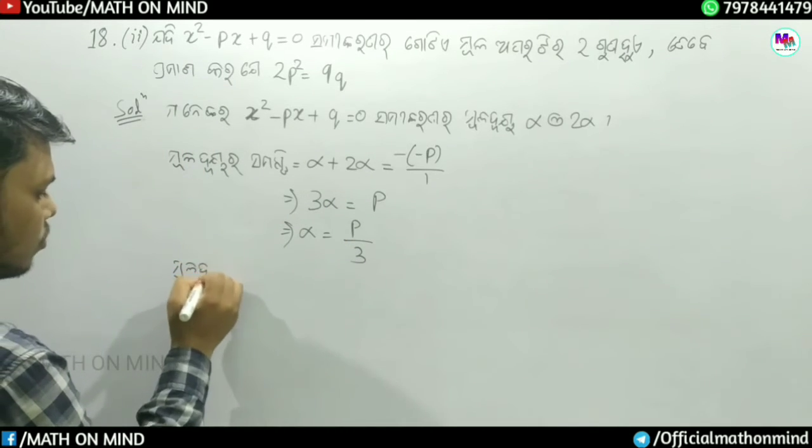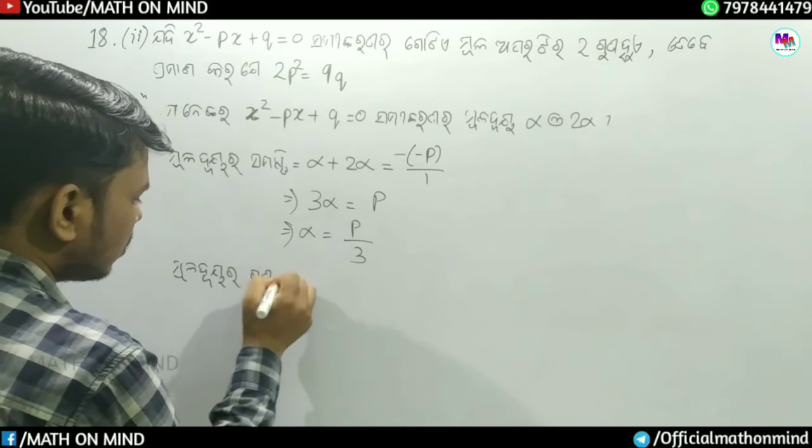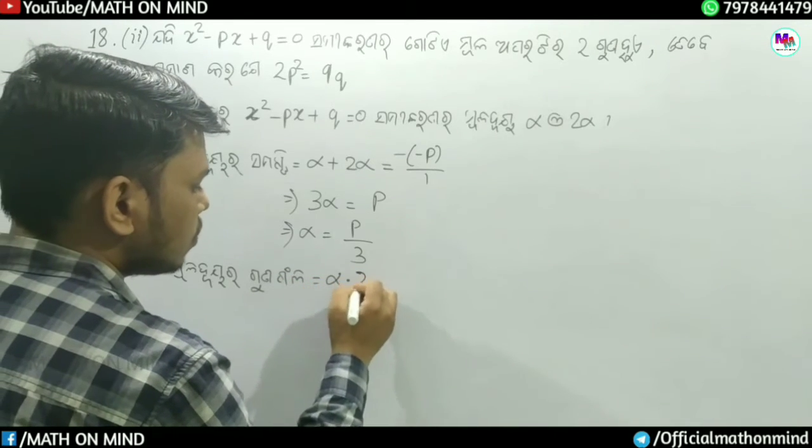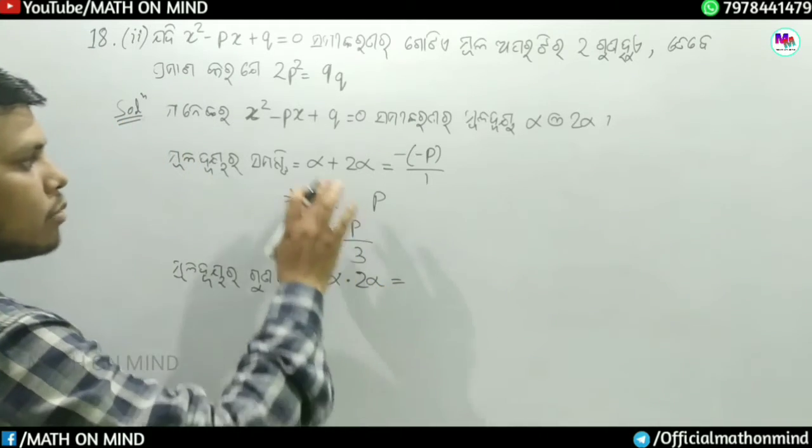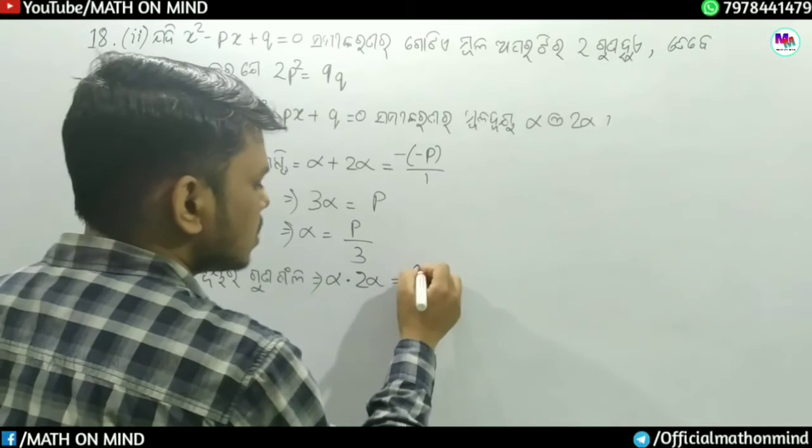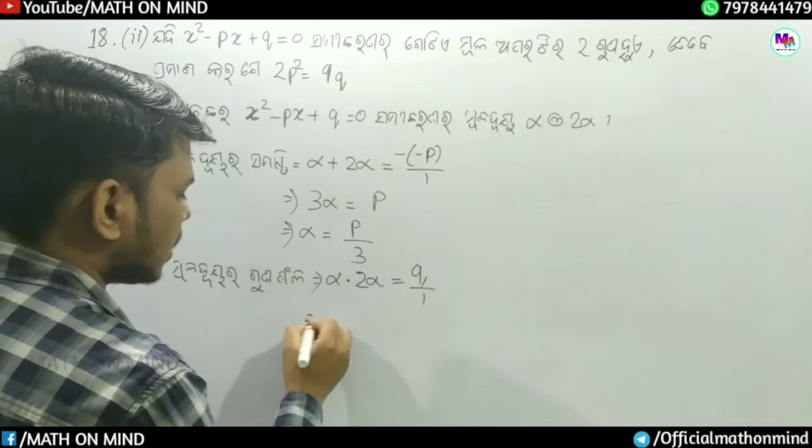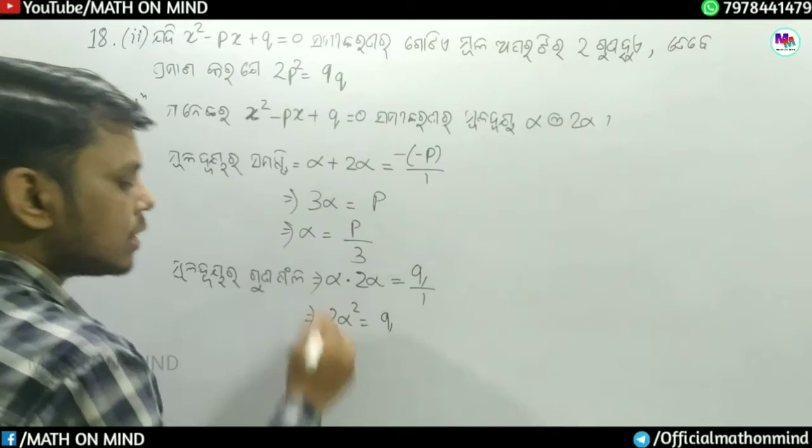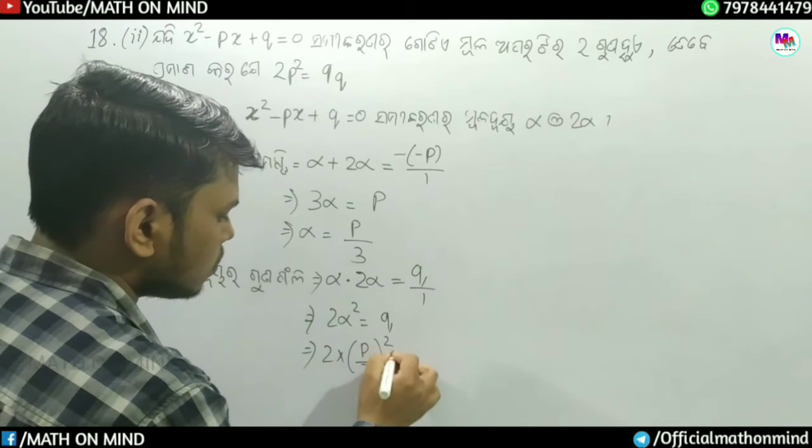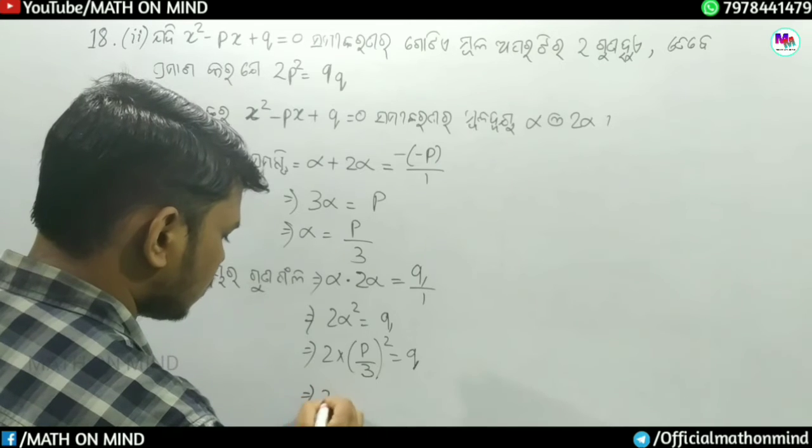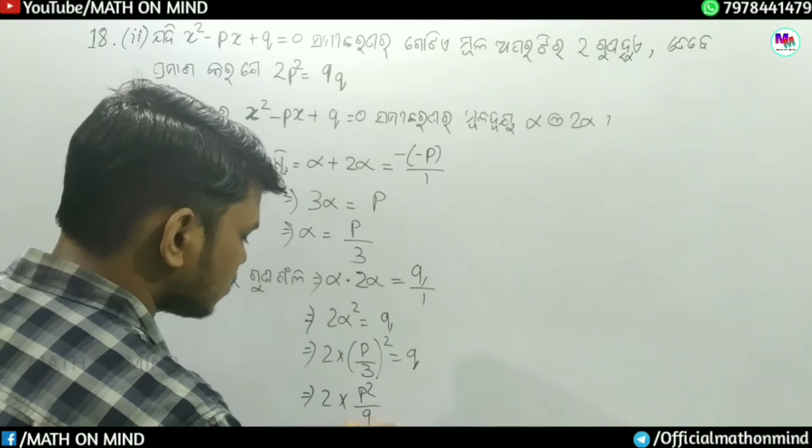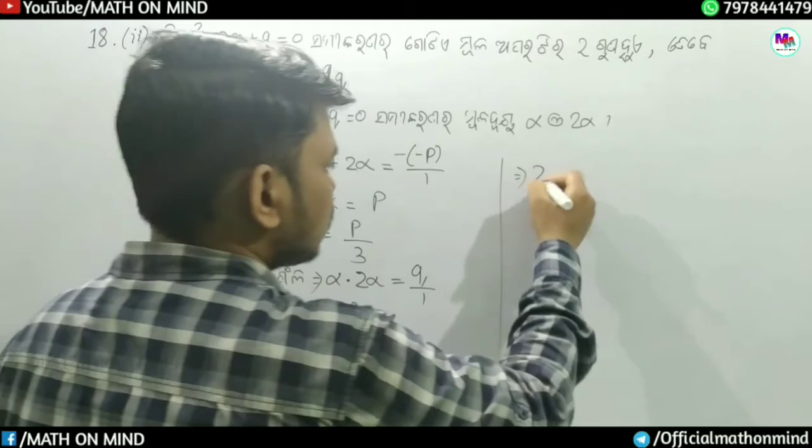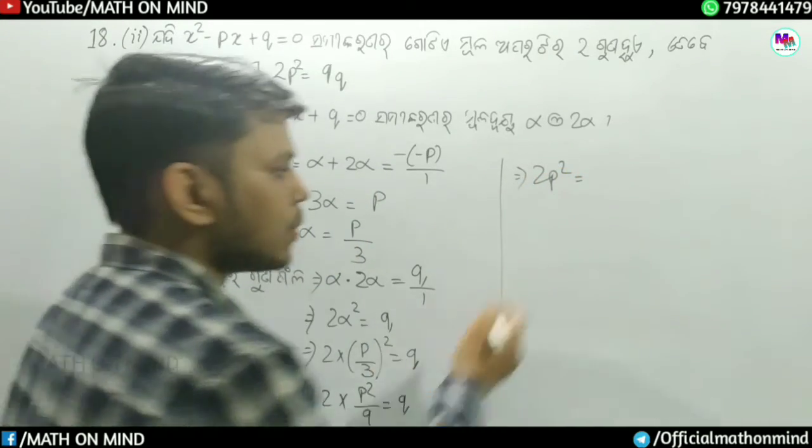So 3 alpha equals p divided by a, which means alpha equals p divided by 3. Now alpha into 2 alpha equals q divided by a. So 2 into p by 3 whole square is equal to q.